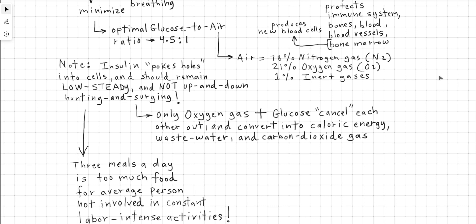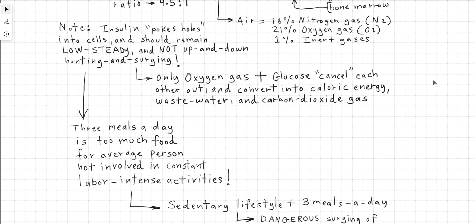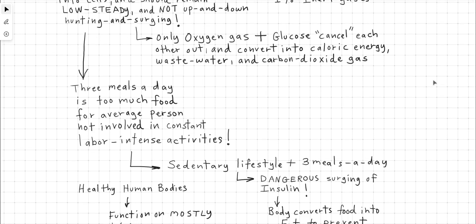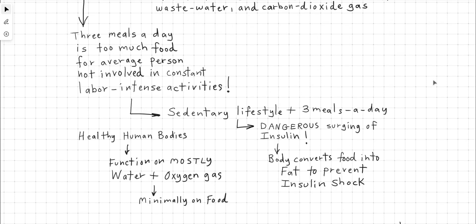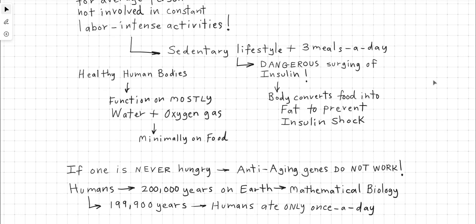What happens if people eat too much food and they are dehydrated? They eat too much and they don't have enough hydration to then convert the food into energy by absorbing enough oxygen and converting the food into a solution. The insulin will then spike and increase forcing the body to convert most of the food into fat. Three meals a day is too much food for average person not involved in constant labor intense activities. Sedentary lifestyle plus three meals a day is very dangerous and causes the insulin levels to surge. The body will protect itself by converting most of the food that is eaten into fat in order to prevent insulin shock.